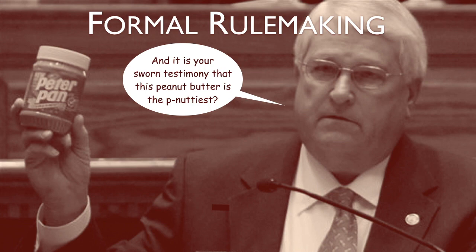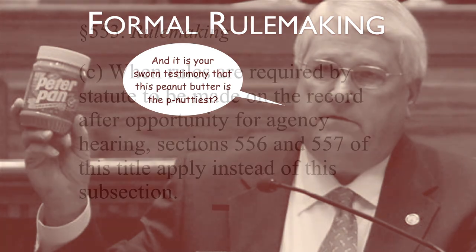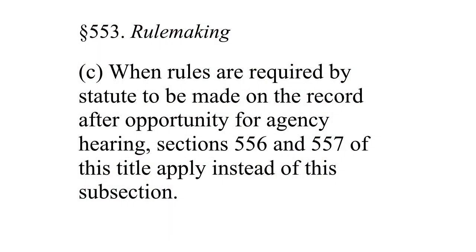When are agencies required to use formal procedures? Section 553 tells us: when rules are required by statute to be made on the record after opportunity for agency hearing, Sections 556 and 557 apply instead. Required by statute — that is, when Congress says so.